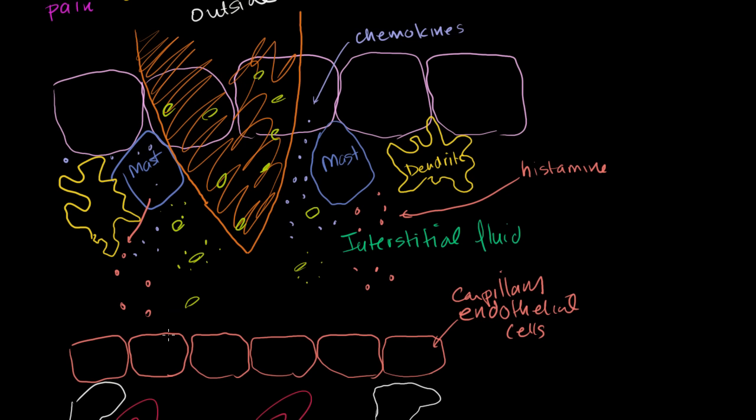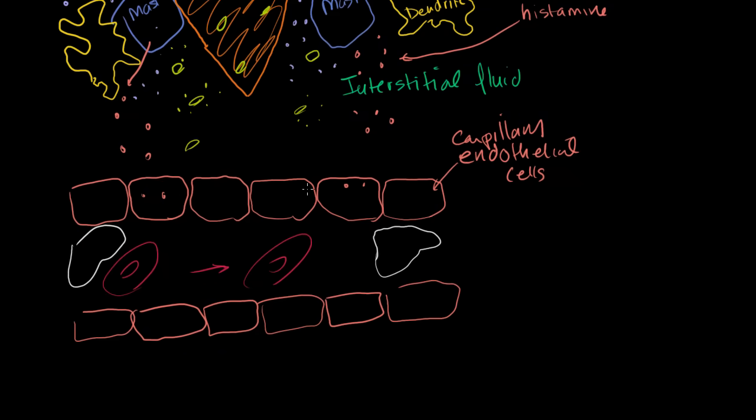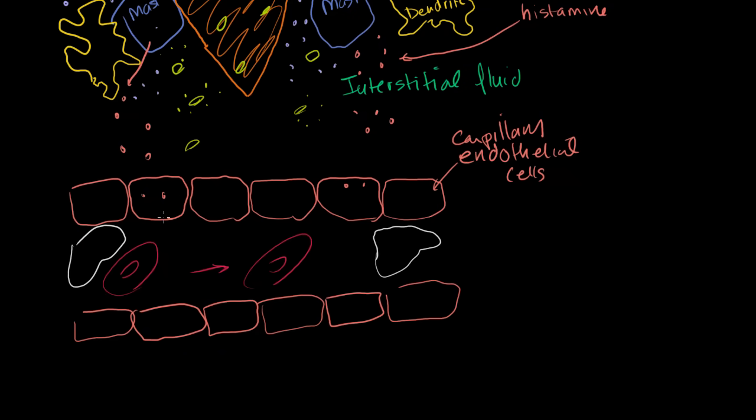So the histamine, one of the things that the histamine does, is it goes to the endothelial cells that line your capillaries, and it causes them to separate away from each other and make the actual capillaries larger. This is called vasodilation.